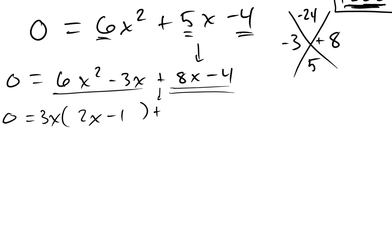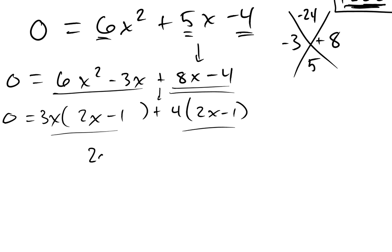What's the GCF of the second two terms? I can bring out a 4. When I factor out the 4, both of these terms have a common factor of 2x minus 1 — they both have it. So I factor out the 2x minus 1 from both groups.